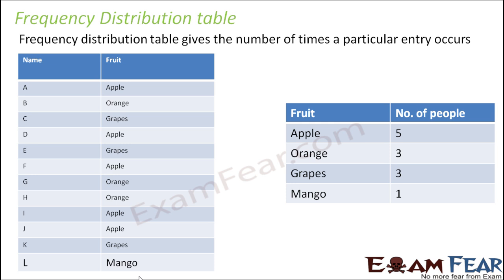So, here we talk about the frequency distribution table — that's a bigger name. You might be thinking it's a bigger concept as well, but the concept is pretty simple. In fact, this concept is to make our task simpler. This is the table that we had: names of people and their favorite fruits. Now, the number of times any particular data gets repeated is called its frequency. For example, the frequency of apple — the number of times apple is getting repeated — would be 5, because it is getting repeated 5 times.